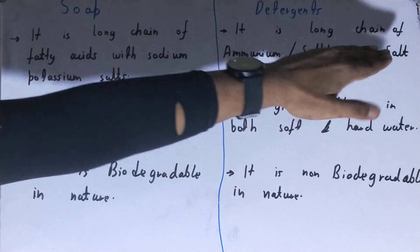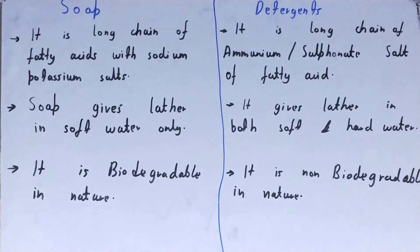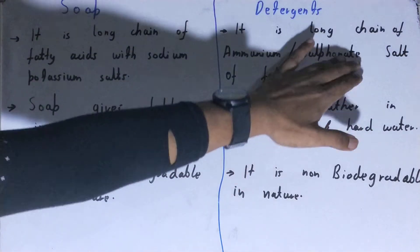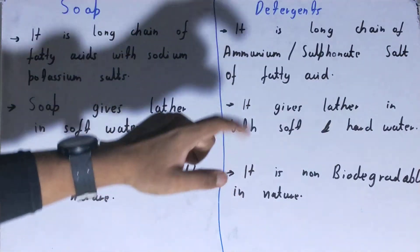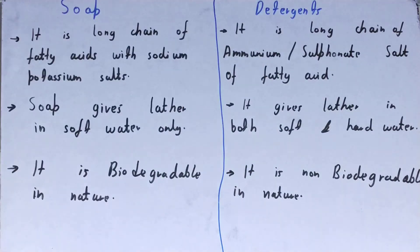Whereas if we talk about detergents, it is a long chain of either ammonium or sulfonate salts of fatty acids.